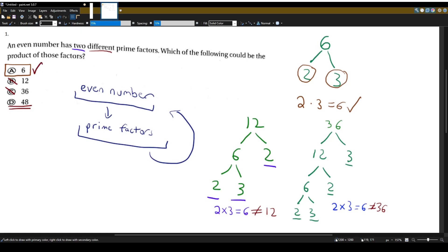So 6 is our answer because it's an even number. Check. It has two different prime numbers. Check and check. And 6 is a product of those two factors.